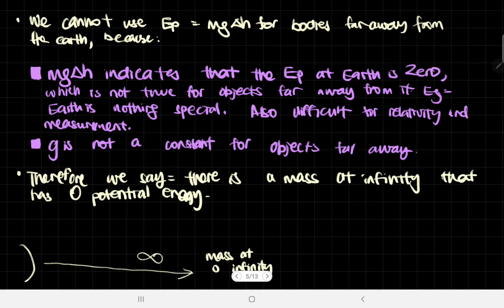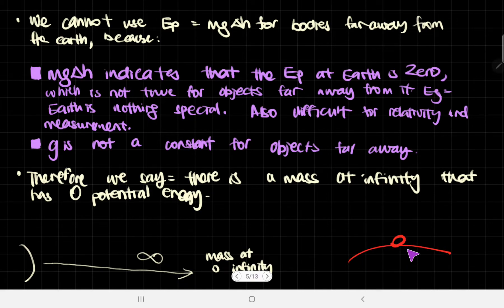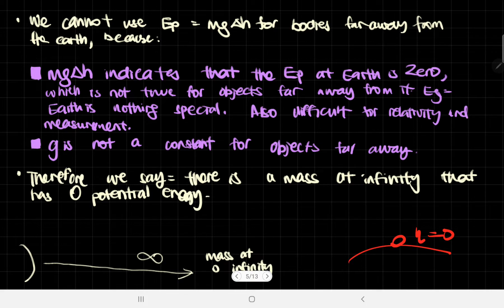Therefore, we say that there is a mass at infinity that has zero potential energy. Now that we don't want to use MGH, we cannot say that the energy when you are on the surface of the Earth is zero, which means we have to set something else to have zero gravitational potential energy.